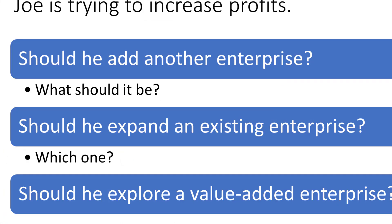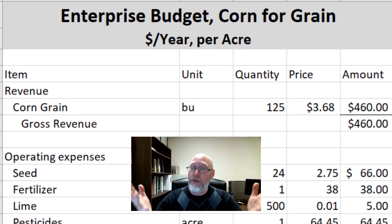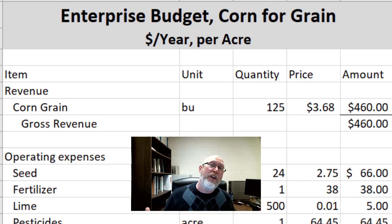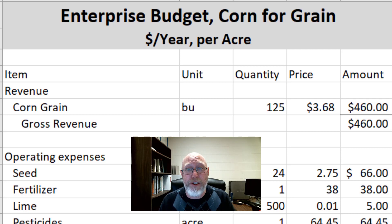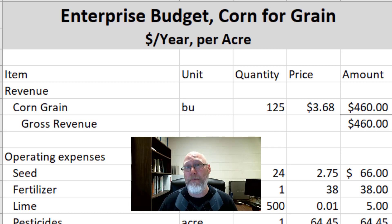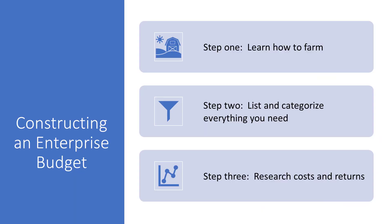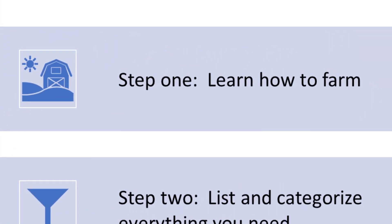Should you expand an existing enterprise? Maybe you've got an enterprise budget for your corn operation and you're trying to figure out if you want to plant more corn next year. Maybe you want to do some type of value-added processing enterprise where you take fruit from your farm — your berries — and turn them into a jam or a pie that people might pay top dollar for. This is the first step to creating a budget for any type of enterprise, whether it's a farm or not. Step one is to actually learn how to run the business.